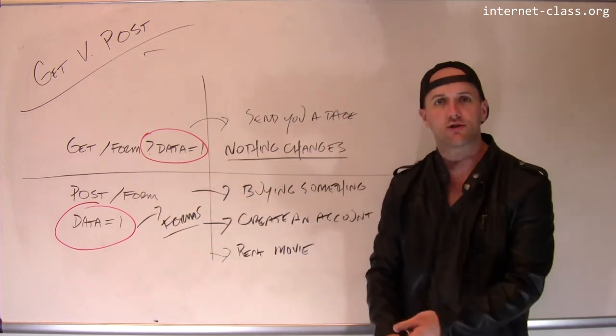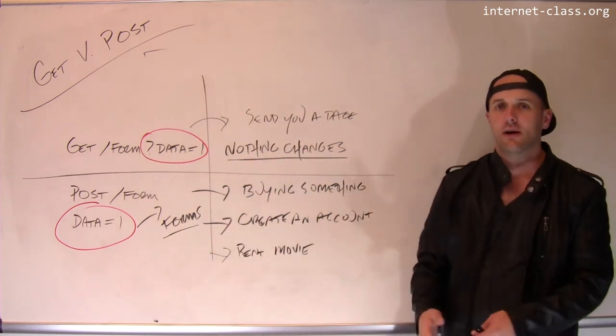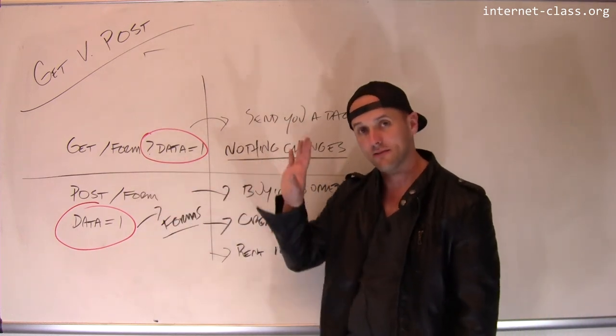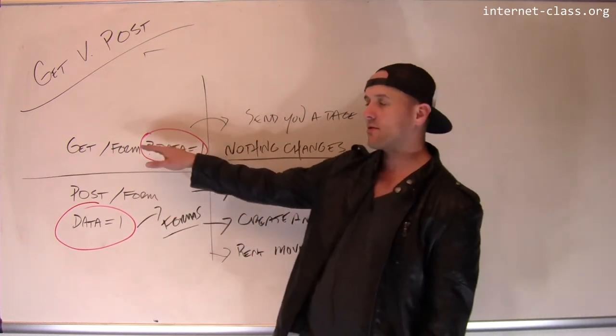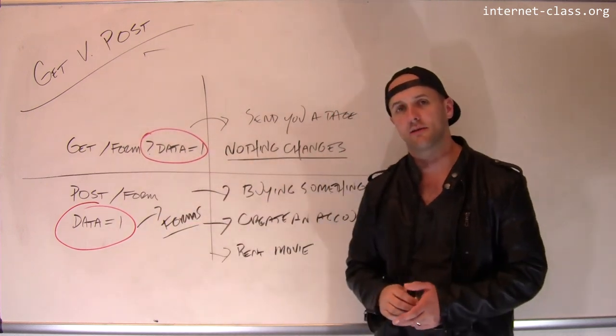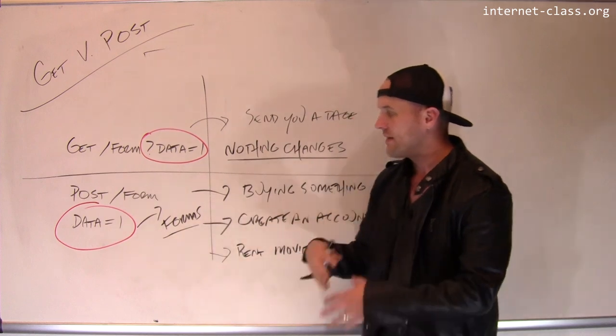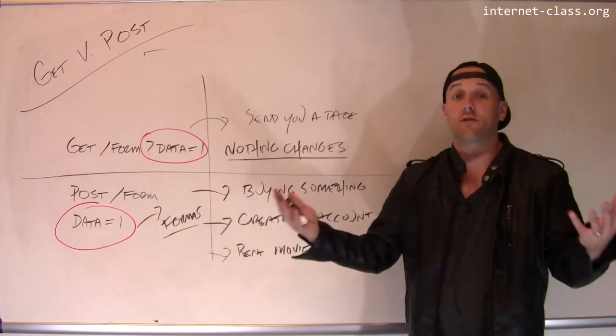So if the request is going to change the world in some way, if it's going to charge your credit card, create an account, cause something to start to happen, POST is what's used for that. And that's the semantics of POST. If nothing is going to change, I use the GET request instead. But both these requests can be used to communicate identical data to the server. The differences are just in terms of what happens in the world as a result.